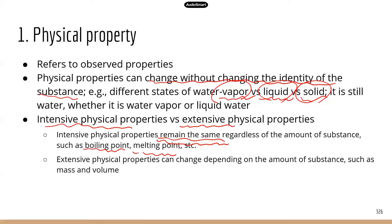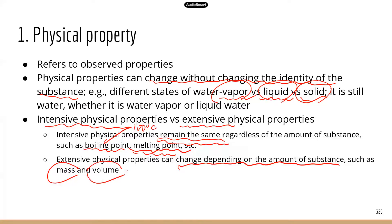The boiling point of water is still 100 degrees Celsius. Extensive physical properties can change depending on how much substance you have. For instance, mass — mass is basically the weight of the substance, so it definitely depends on the amount of substance. Volume: the less substance you have, the less volume it is, and the more substance you have, the more the volume is.